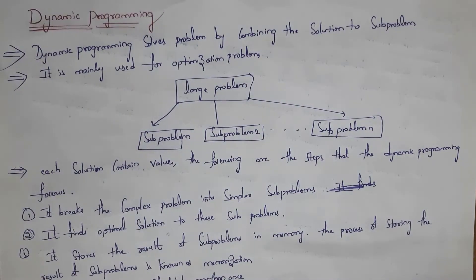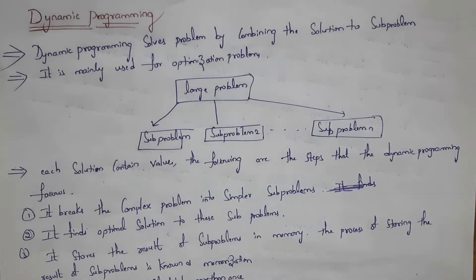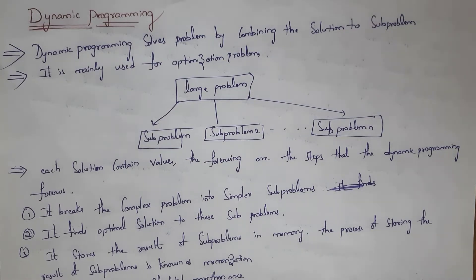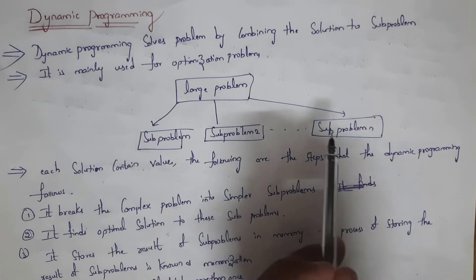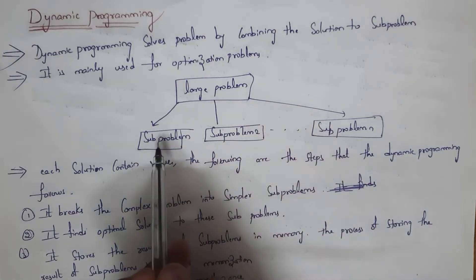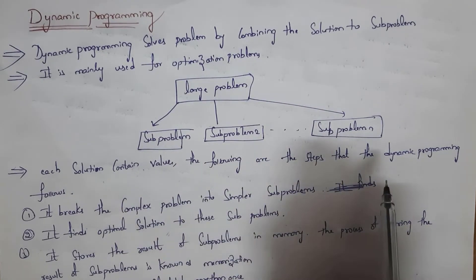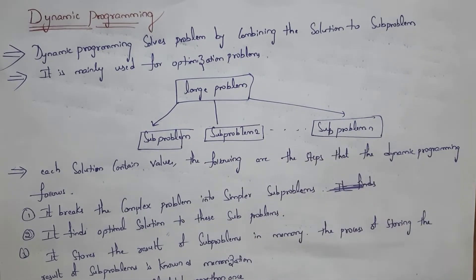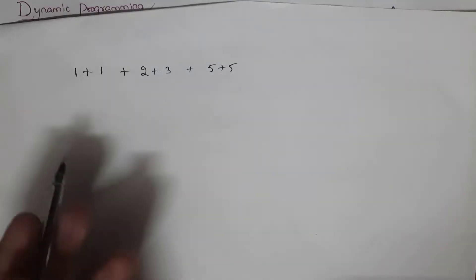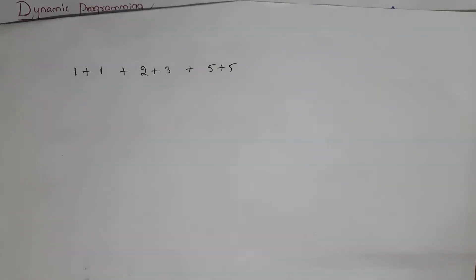What dynamic programming will do is divide the largest problem into smaller sub-problems, then find the solution to each sub-problem, and at last combine all these solutions to get the solution to the large problem. For example, given a large problem, dynamic programming will divide it into smaller sub-problems.